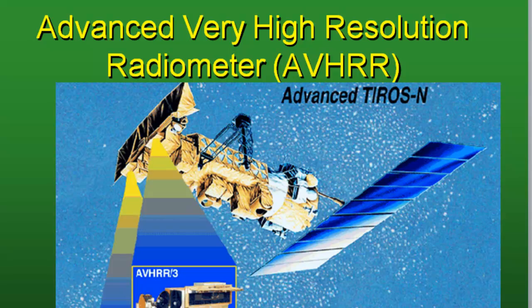Welcome back to remote sensing applications using ArcGIS. This week we're going to be working with data acquired from the Advanced Very High Resolution Radiometer, which is called AVHRR, and it's onboard NOAA satellites.